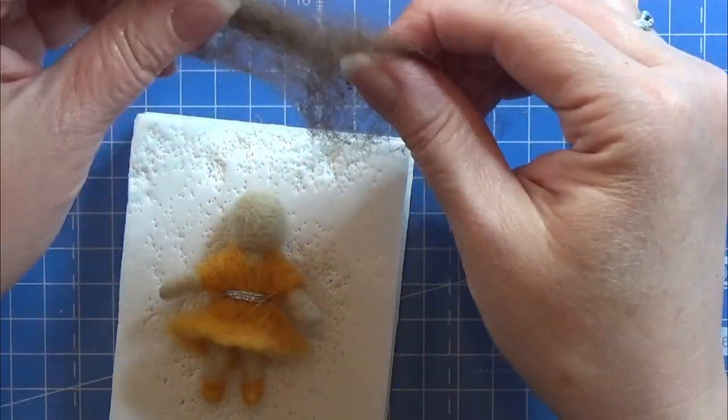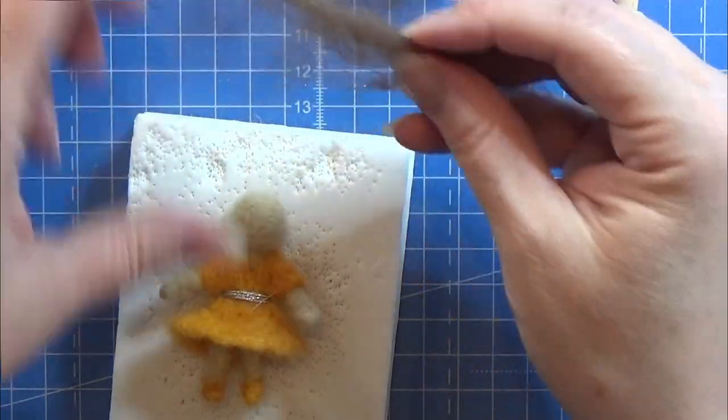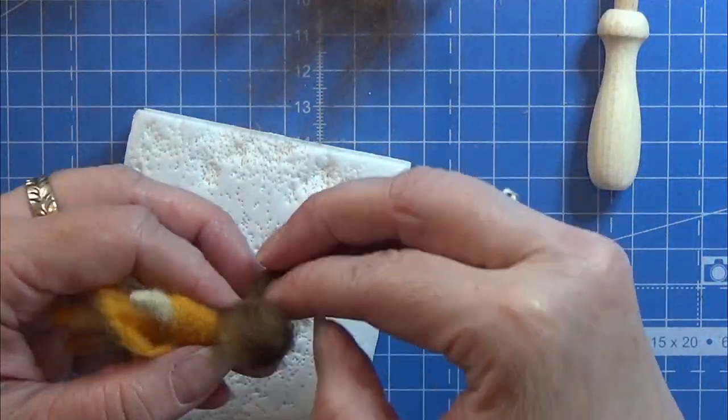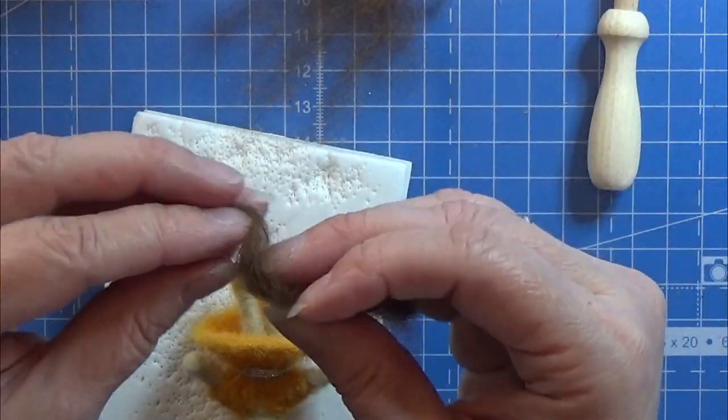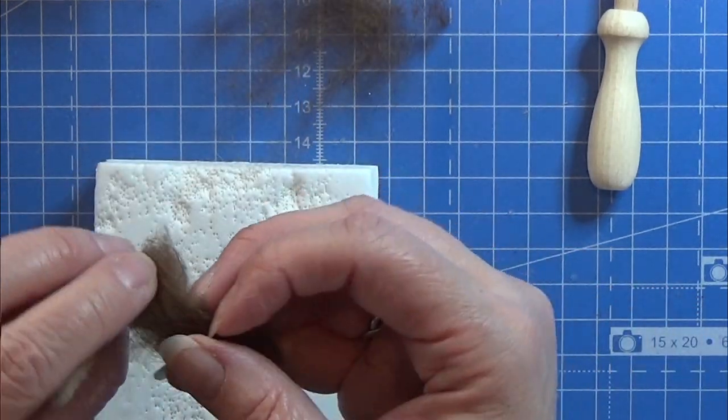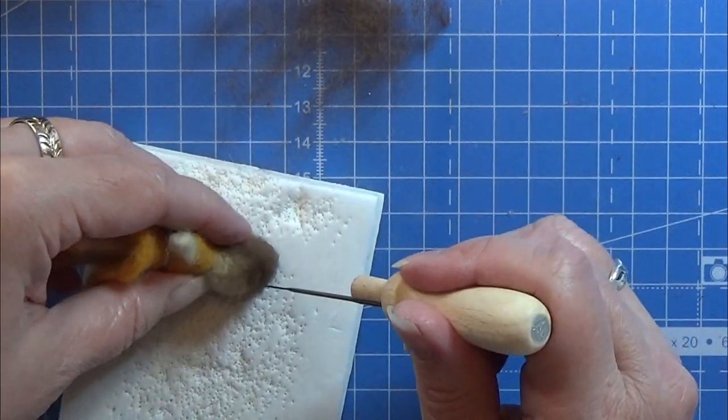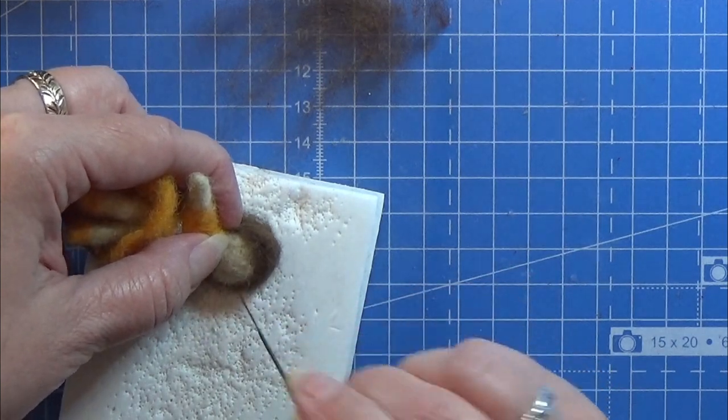Then it is time for her hair. I just take a strand of this brown colored wool and I wrap it around her head. I want to make something that looks a bit like a bun in the back of her head, so I'm just shaping it.